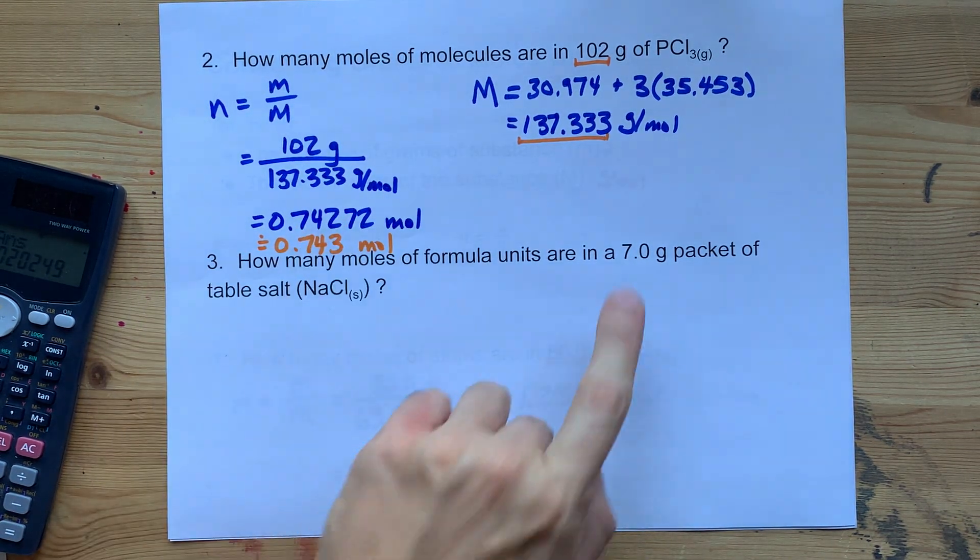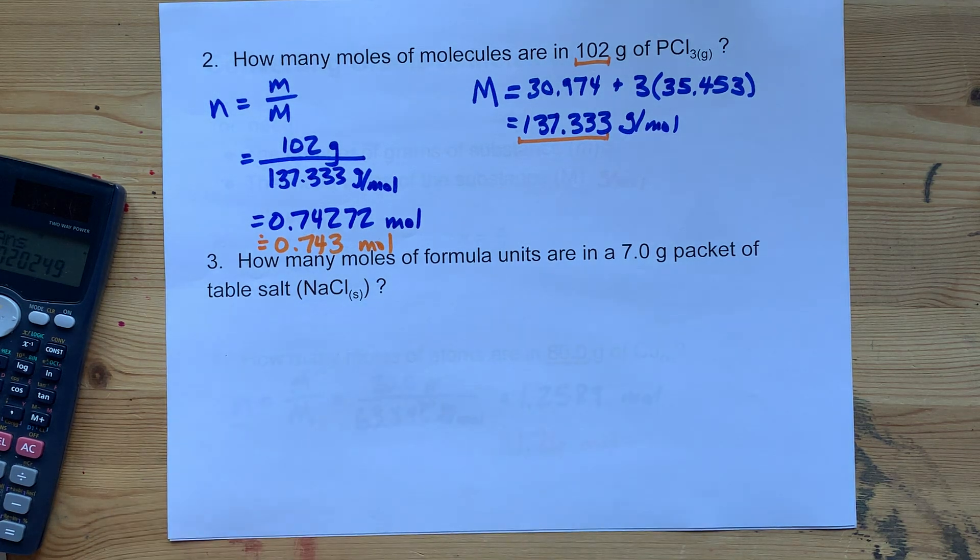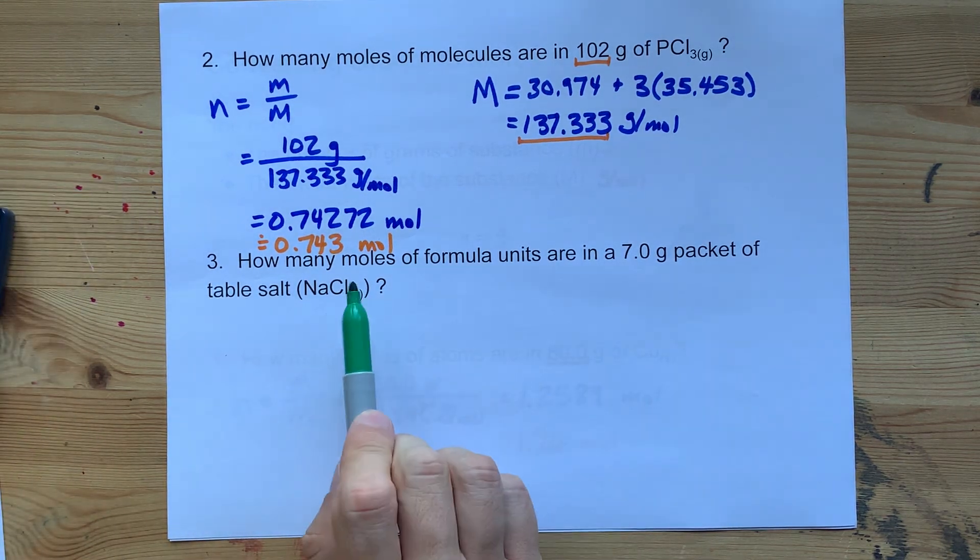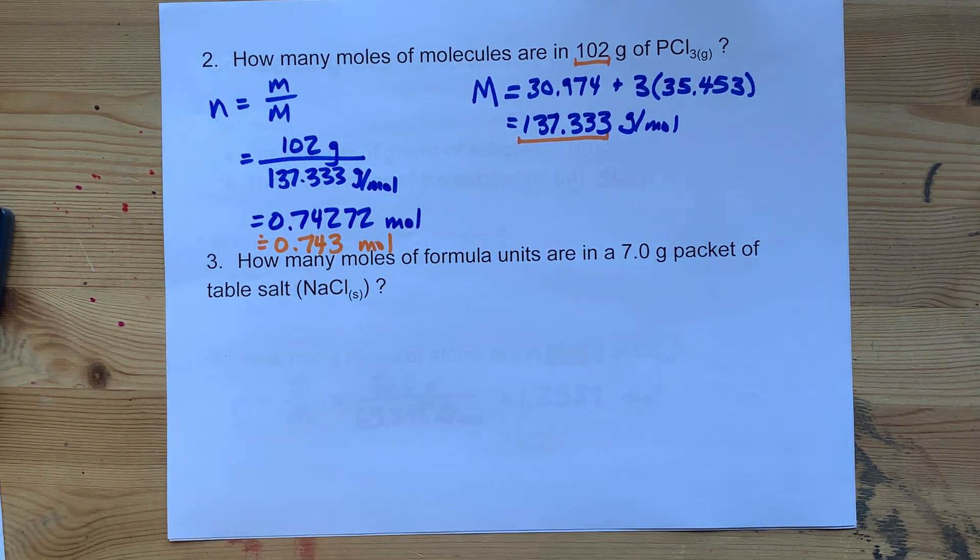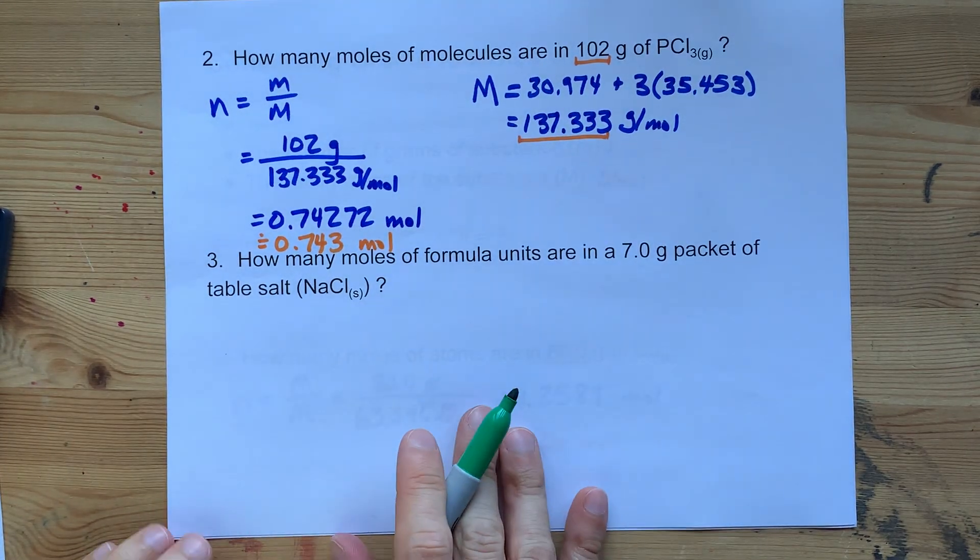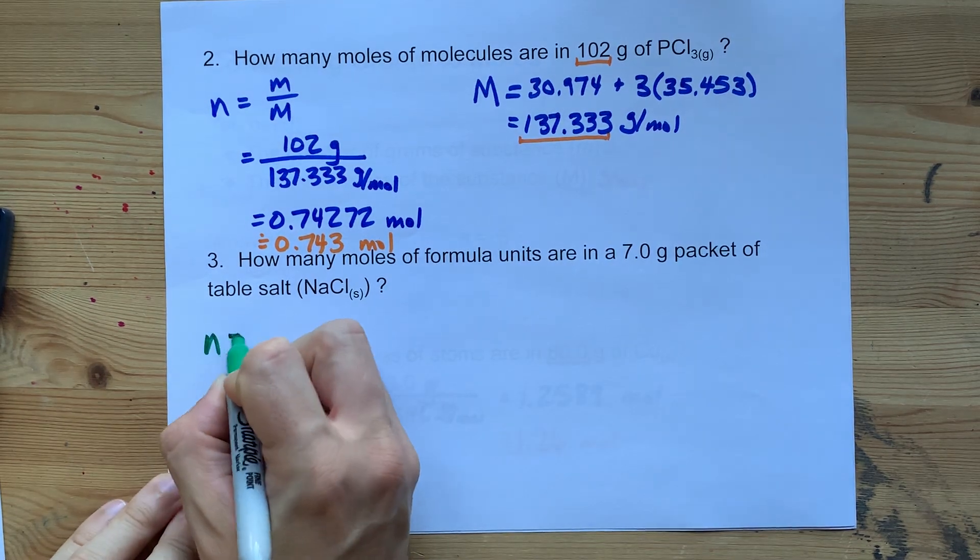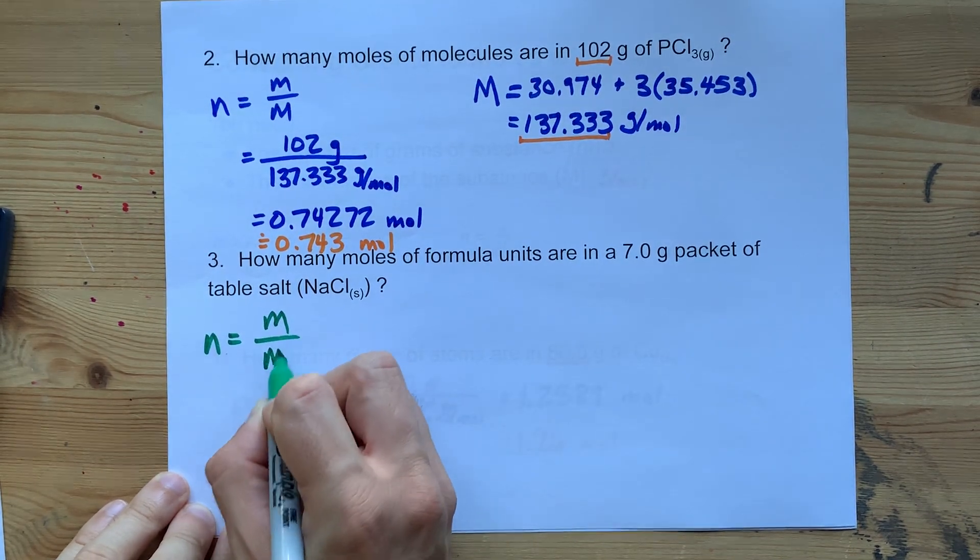We're going to do it one more time with 7 grams of NaCl. They're asking for the number of moles of formula units. That's the same as molecules except for ionic compounds. The number of moles is the mass over the molar mass.